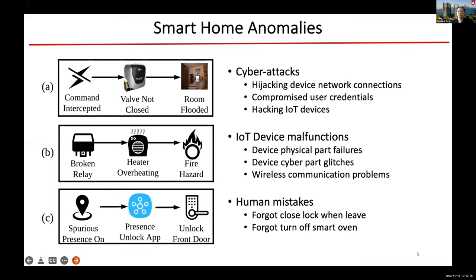Another source of anomaly is human error or human mistake. For example, if the user is in the morning and rushes to work and forgets to lock the door, or turns on the smart oven for breakfast but forgets to turn it off. So again, in this work, we want to detect anomalies — it could be caused by any of these reasons.